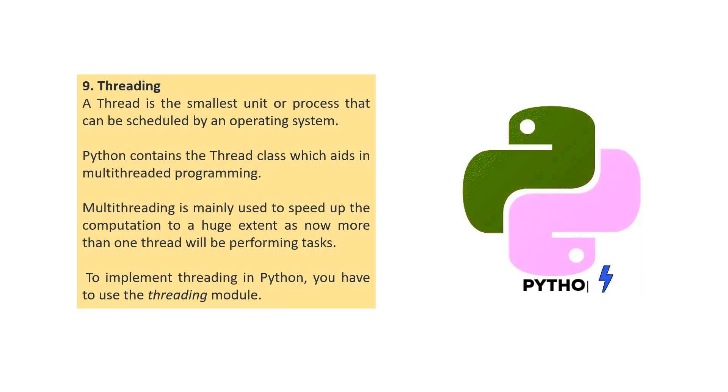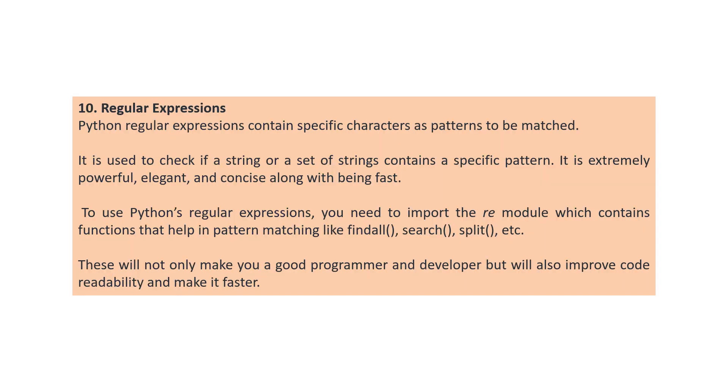Next is threading. Thread is the smallest user unit of process that can be scheduled by an operating system. Python contains the thread class which aids in multi-threaded programming. This is mainly used to speed up the computation to a huge extent as now more than one thread will be performing the task. To implement threading in Python, you have to use the threading module.